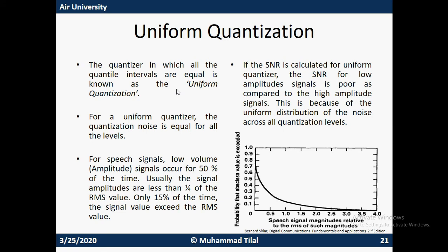Only 15% of the time does the signal value exceed the RMS value, which means most of the time we are dealing with a low amplitude signal. Now if I want to calculate SNR using a uniform quantizer, the signal-to-noise ratio for a low amplitude signal is going to be poor. It is because most of the time when my signal has low amplitude, the signal power will be lower. But since we are using a uniform quantizer, the noise power remains the same. So SNR for low amplitude signal will be poor compared to when we have a higher amplitude signal, which gives higher signal power and higher SNR.